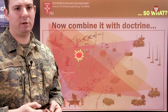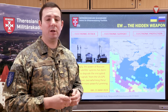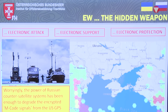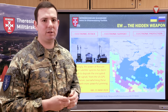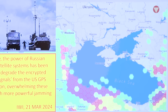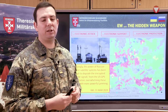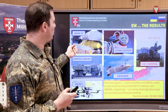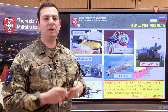Now we have basic knowledge about signal intelligence, deception, and disruption. Electronic warfare is a hidden weapon — you can use electronic attack measures, electronic support measures, and electronic protection measures. On the southern part of the Black Sea, red hexagons represent the jamming of GNSS — Global Navigation Satellite Systems. Systems such as JDAMs, Storm Shadows, HIMARS, Excalibur, and drones can all be jammed in order to degrade their performance.